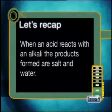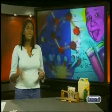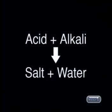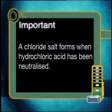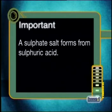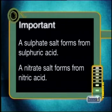So far we have introduced some important ideas about neutralization in this lesson. Let's recap what we have learned. When an acid reacts with an alkali, the products formed are salt and water. We can write this as a general equation: acid plus alkali react to form salt plus water. Also remember that a chloride salt forms when hydrochloric acid has been neutralized, a sulfate salt forms from sulfuric acid, and a nitrate salt forms from nitric acid.